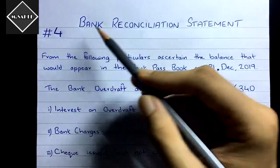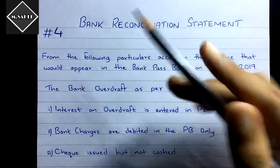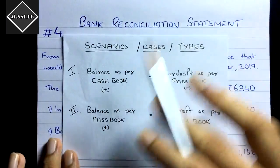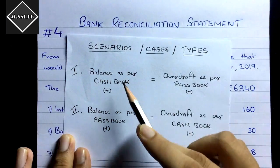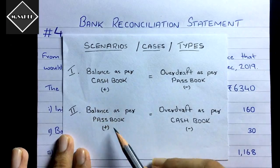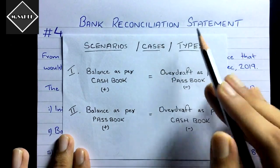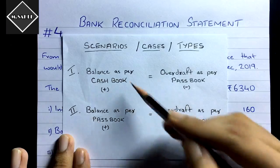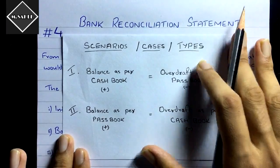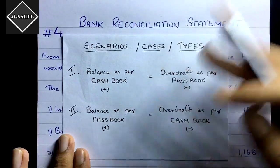Hi everyone, this is the fourth video of the bank reconciliation chapter. In the previous three videos we have seen the concept of bank reconciliation and also solved two problems based upon the first and second scenario — favorable balances per cash book and balances per passbook. If you haven't watched those videos, please watch those first along with the concept video, so you can understand and go sequentially.